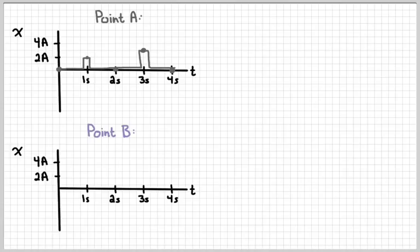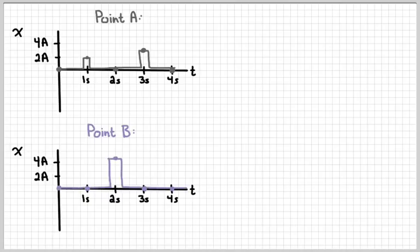Point B, on the other hand, also starts out with zero displacement. At one second, there still hasn't been a wave to travel through point B, so it's still at zero. At two seconds, that's where both waves reach point B, so that point goes up to a displacement of 5a at two seconds. Then the two waves pass and that point returns to equilibrium. A position-versus-time graph would look something like that for point B.